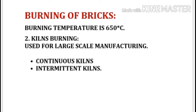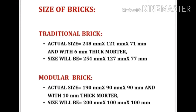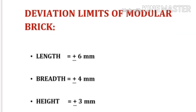Kilns are used for large scale manufacturing; different types of kilns are available depending upon the volume of bricks. Traditional brick actual size is 248 mm × 121 mm × 71 mm, and with 6 mm thick mortar the size will be 254 mm × 127 mm × 77 mm. In case of modular brick, actual size is 190 mm × 90 mm × 90 mm, and with 10 mm thick mortar the size will be 200 mm × 100 mm × 100 mm.